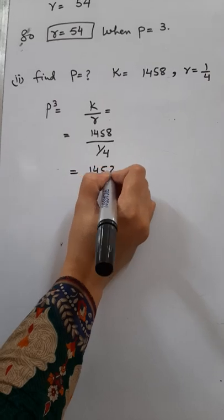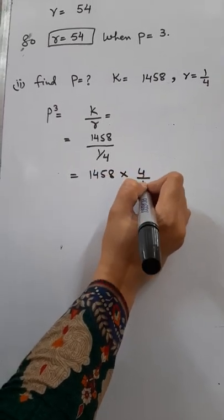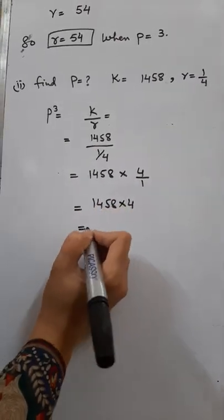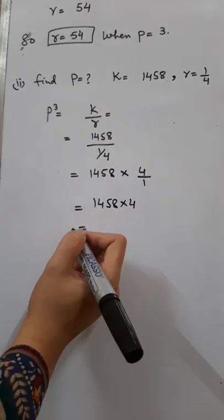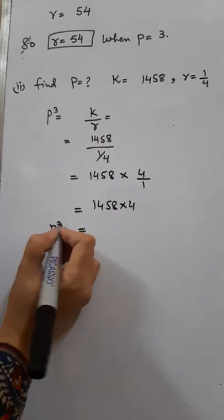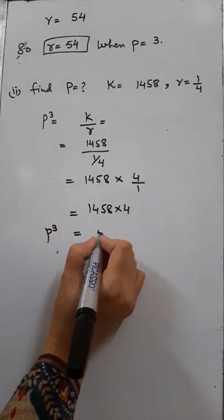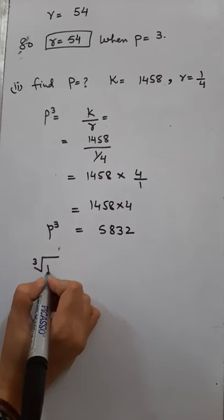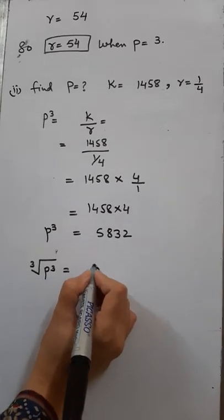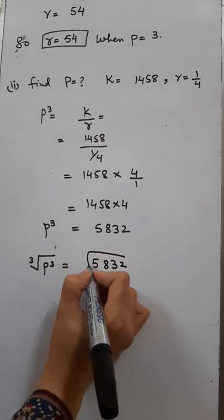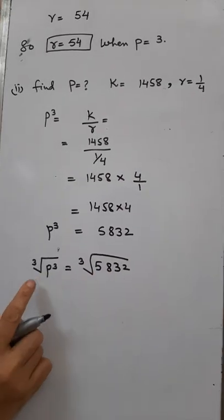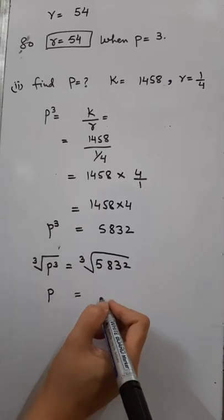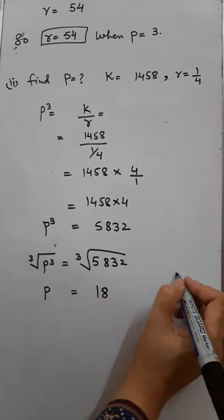Since R is 1/4, when you bring the division to multiplication, it becomes 4 by 1. So multiply 1458 by 4. Using the calculator, the value of P³ comes out to be 5832. Since it's a cube root, we need to find P using the cube root. Apply the cube root symbol on both sides and calculate using the calculator — the value of P comes out to be 18, because 18 cubed is 5832.